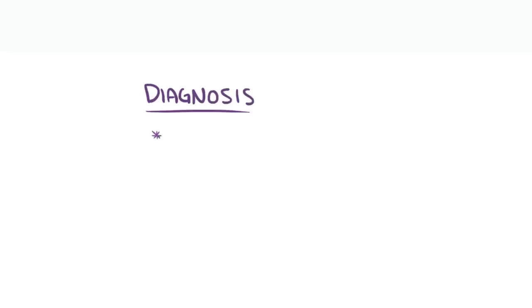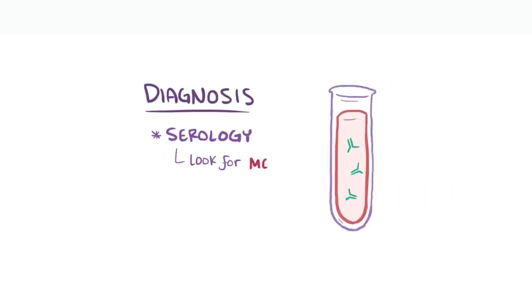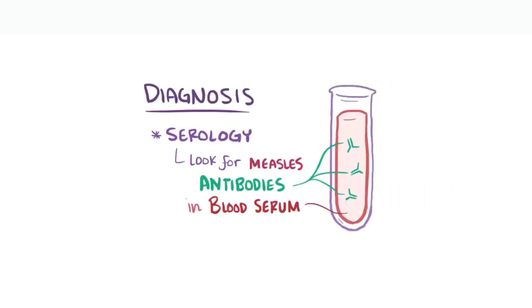Diagnosis of measles is usually done via serology, looking for measles antibodies in the blood serum, and the disease is most likely to occur in unvaccinated individuals.